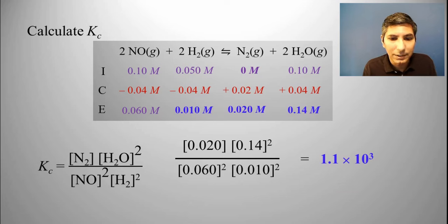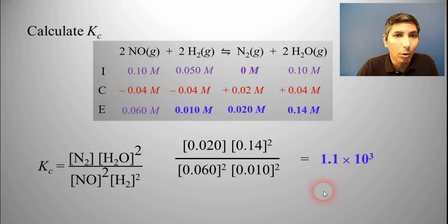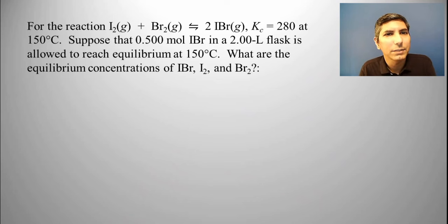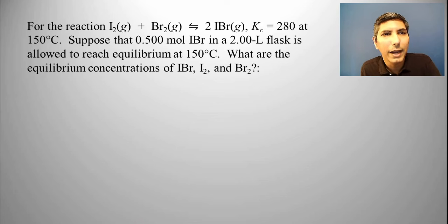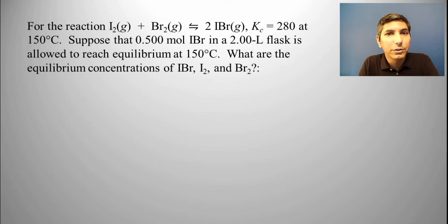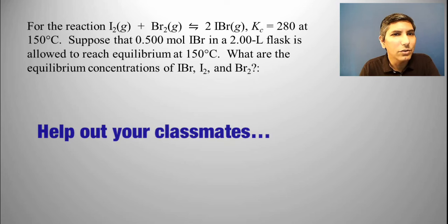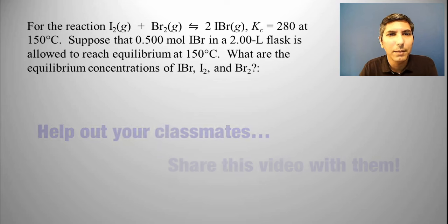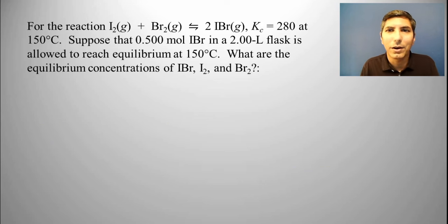We were able to solve for that using just the information given to us in the problem. Let's try another example — this one might be a little bit more complex. For the reaction I2 gas plus Br2 gas yields two IBr gas, Kc equals 280 at 150 degrees Celsius. Suppose that 0.5 moles of IBr in a two liter flask is allowed to reach equilibrium at 150 degrees Celsius. What are the equilibrium concentrations of IBr, I2, and Br2?